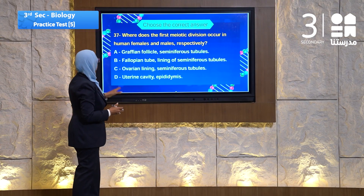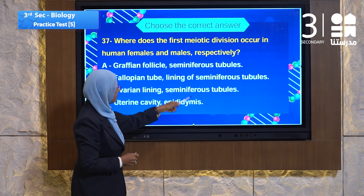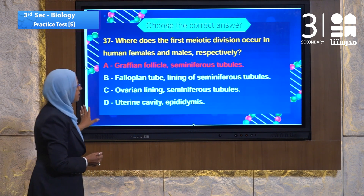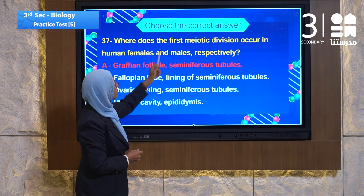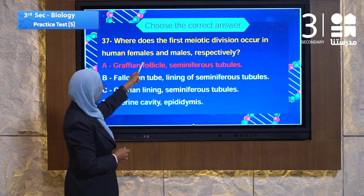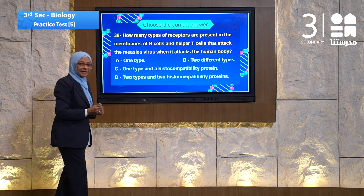Question 37: Where does the first meiotic division occur in human females and males respectively? The choices include Graafian follicles and seminiferous tubules, fallopian tube lining, ovarian lining, or uterine cavity. The answer is A — Graafian follicles for females, where meiotic division occurs, and seminiferous tubules for males.